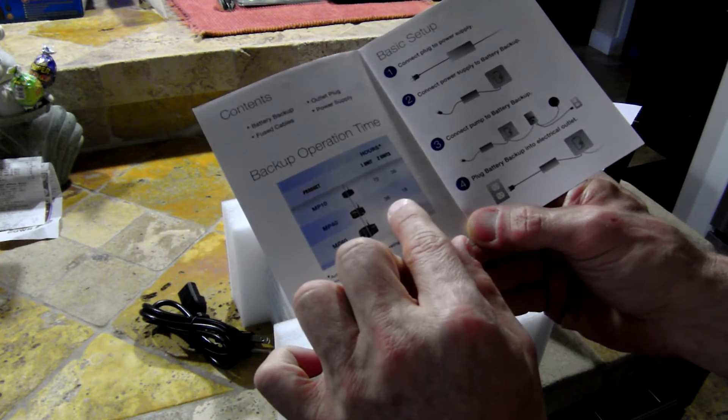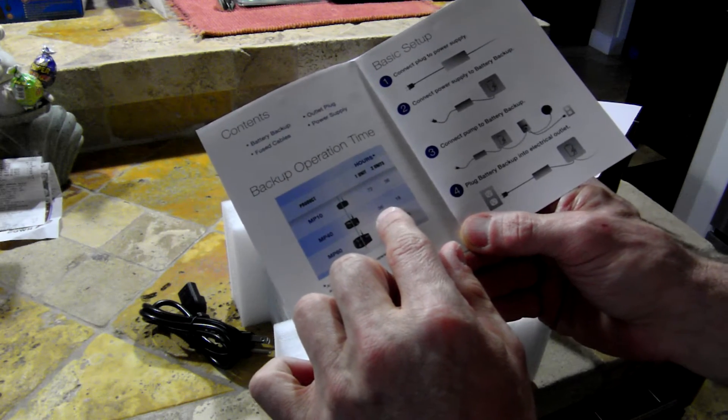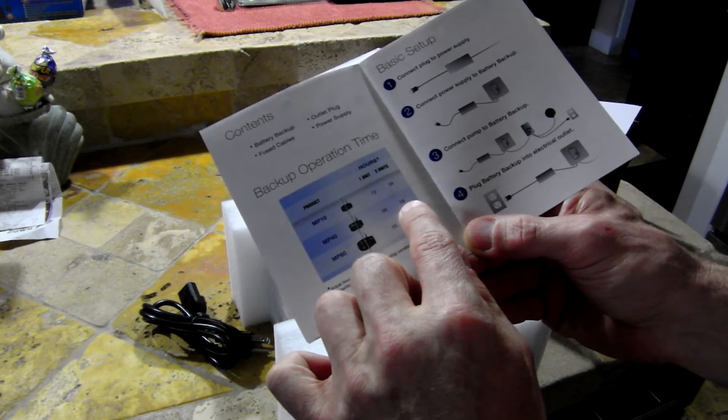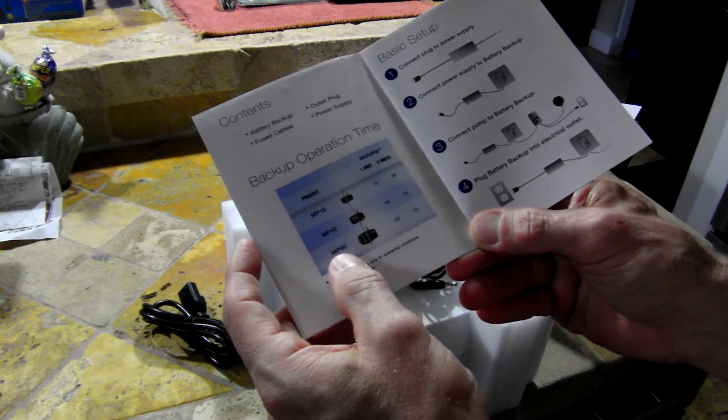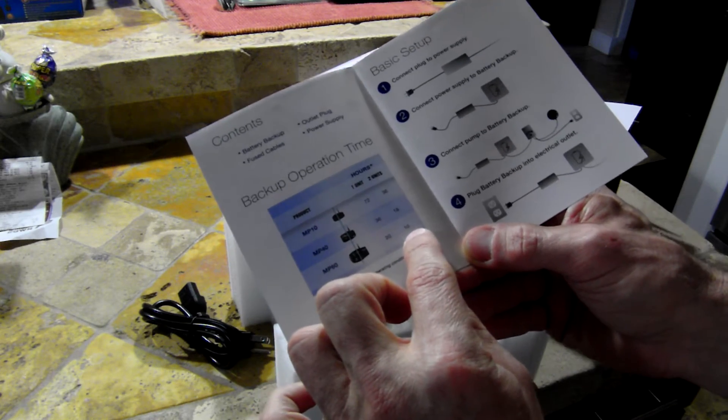MP40s likewise, you have the duration where one or two pumps will run, 36 hours for one unit, 18 hours for two. And the much larger MP60s, a single battery unit, 20 hours, two units, 10 hours.